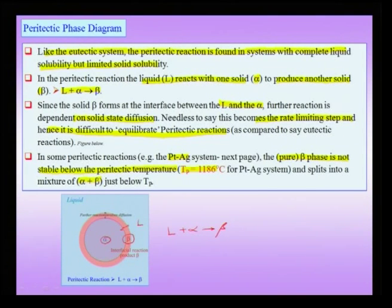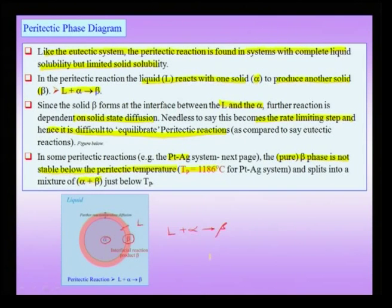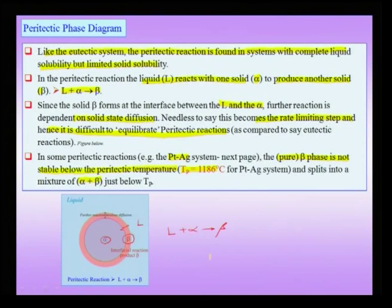Even though the peritectic reaction produces liquid + alpha → beta, the beta immediately splits below the peritectic temperature into alpha + beta. However, we should still write the reaction as liquid + alpha → beta, not as liquid + alpha → alpha + beta.